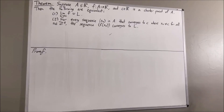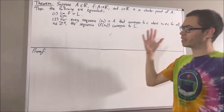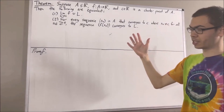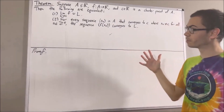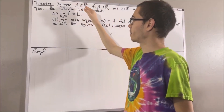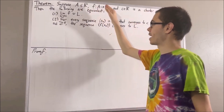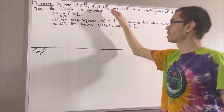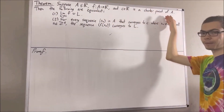Hello! In this video, we are going to prove the sequential criterion for limit of a function. Suppose A is a subset of the real numbers, F is a function from A to the real numbers, and C is a cluster point of A.